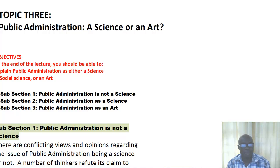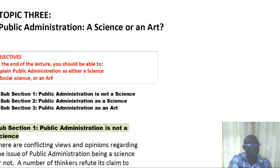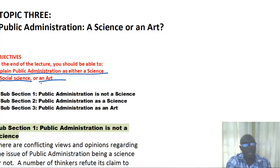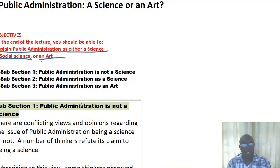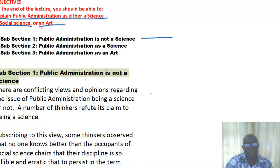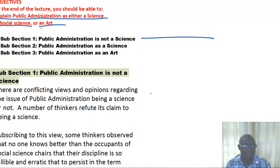Today, like I said, our topic is public administration — a science or an art. The objective of today's session is that at the end you should be able to explain public administration either as a science, a social science, or an art. We will divide this lecture into three sections. The first section will argue that public administration is not a science.